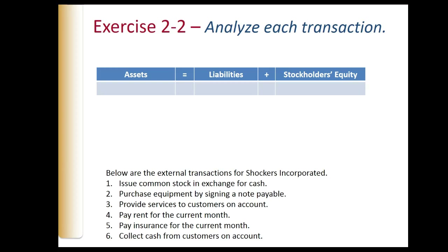In exercise 2-2, we have some external transactions and we're going to discuss what happens with the accounting equation. We'll analyze each transaction and under each category determine what increases, decreases, or has no effect. In the first example, we issue common stock in exchange for cash. The company receives cash — cash increases — and common stock increases, which is part of the stockholders' equity section.